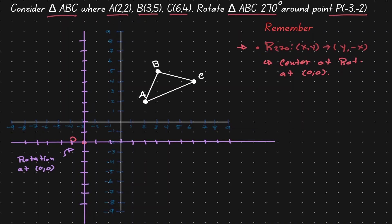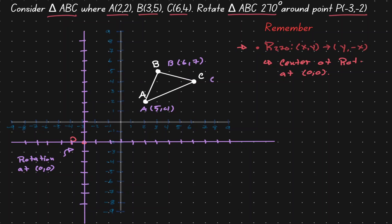With this new axis, our original points also change locations. Notice that now A has an X value of 5 and a Y value of 4, so the new coordinate point is (5, 4). For B, the X value is 6 and the Y value is 7, so the new coordinate point is (6, 7). And for C, the X value is 9 and the Y value is 6, so we define C as (9, 6). Because we have our center of rotation at the origin of the new axis, we can now apply our rule for a rotation of 270 degrees in terms of the new purple axis.